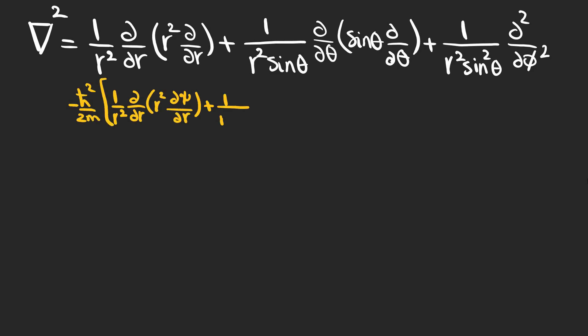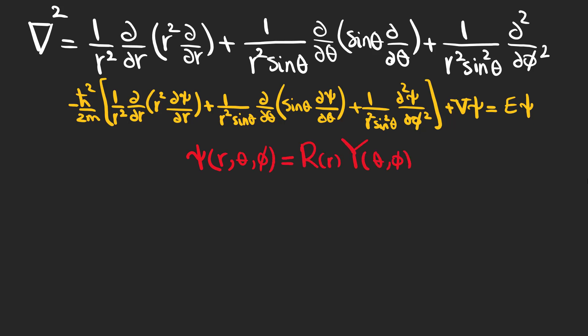Now, it's time to write the time-independent Schrödinger equation in spherical coordinates and solve it. Psi is a function of r, theta, and phi. Let's separate the time-independent wave function into two radial and angular parts multiplied by each other.